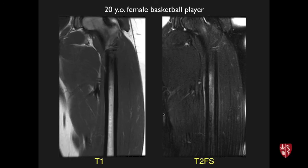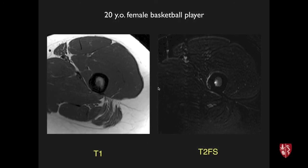Femoral diaphyseal stress fractures also occur. Here in the proximal femoral shaft there is marrow edema in the marrow cavity on T2 and periosteal reaction. These thick cortical bones, like the femur and tibia, are less prone to fracture, but you have to be careful to look for a little intracortical signal that could be a partial longitudinal fracture line, along with periosteal edema, endosteal edema, and marrow edema.